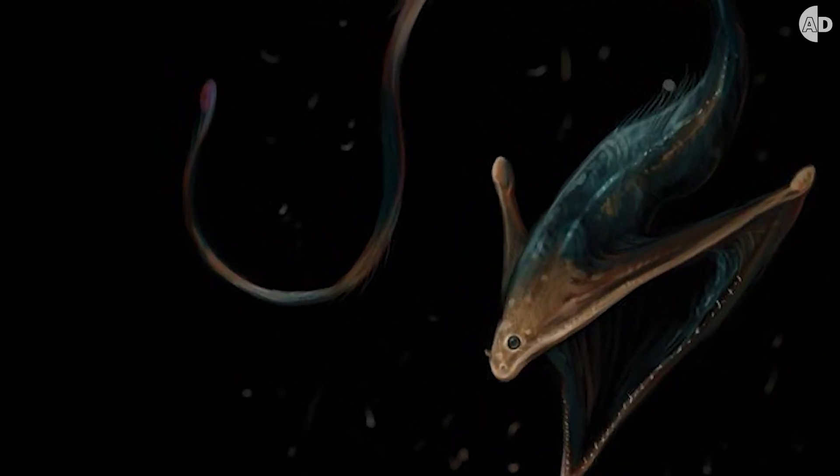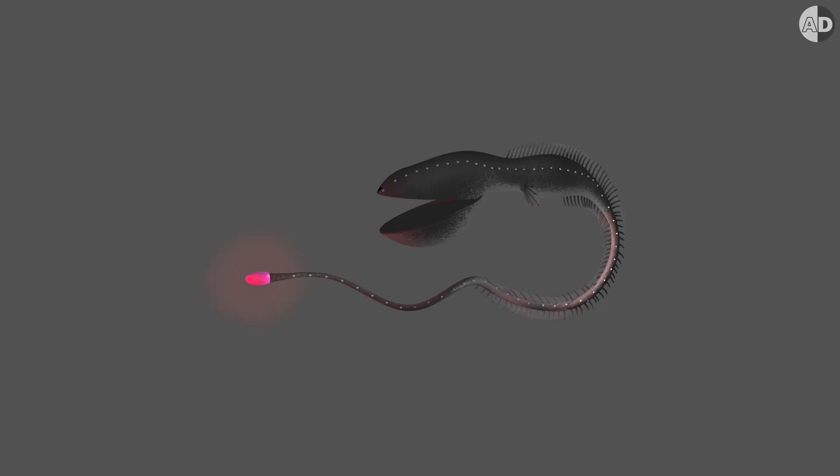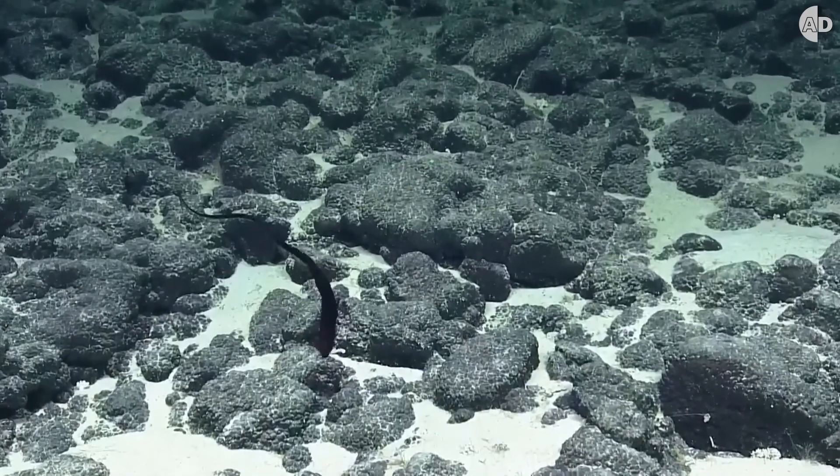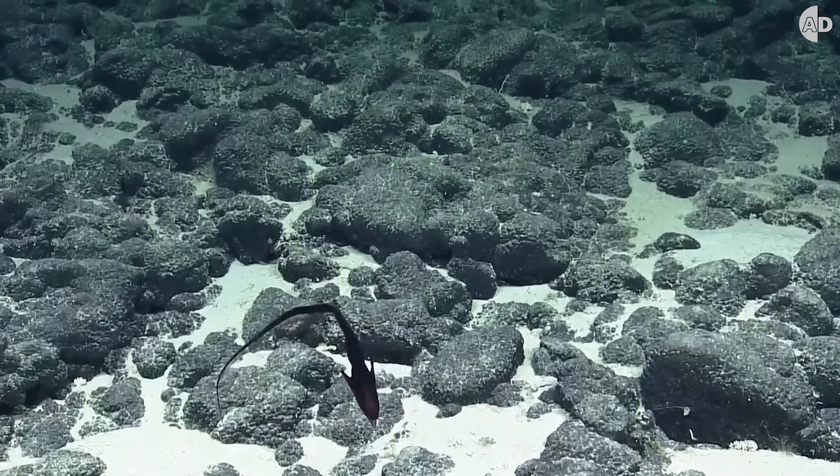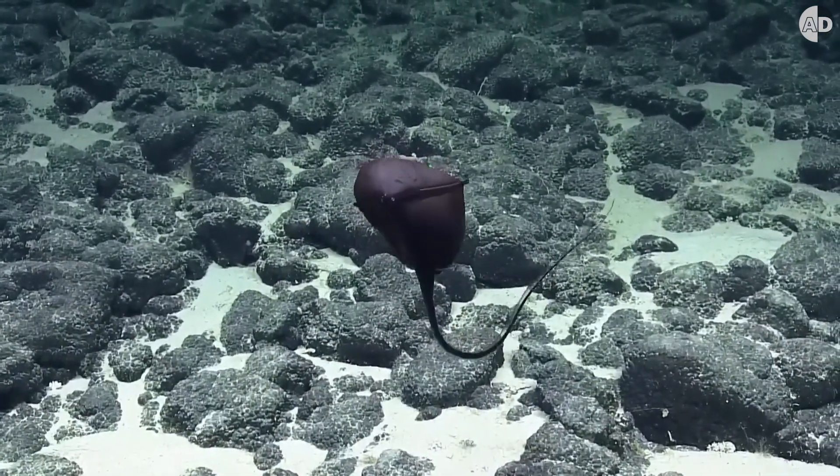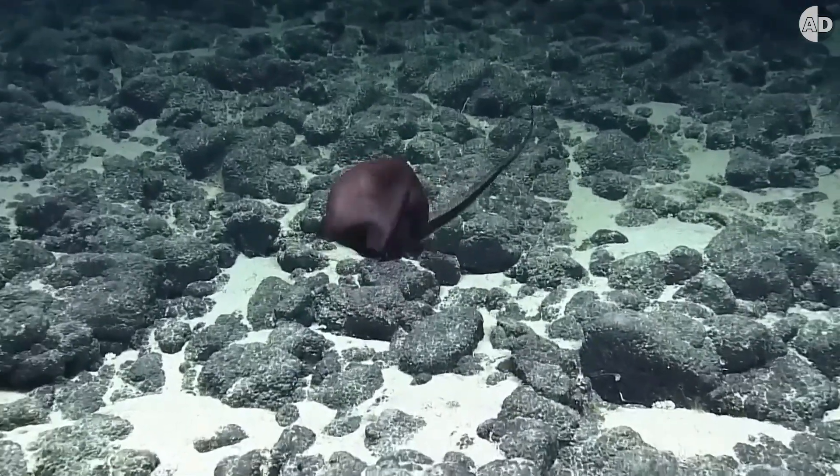So it has evolved to have a bioluminescent organ at the tip of its tail. This organ flashes red light and attracts fish, crustaceans, and squid. And when the prey gets close, the gulper eel quickly inflates its mouth like a balloon and then engulfs its large prey in only one gulp. It then deflates its mouth back to its normal size.